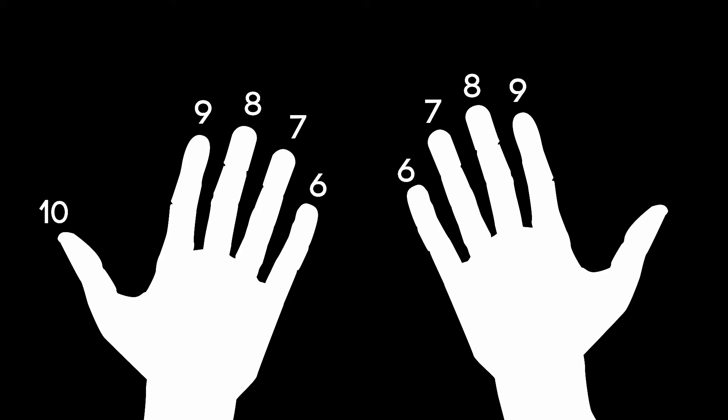Now let's say you had to multiply 6 by 8, you know, for personal reasons. The way we would do this with our hands would be to take your 6 finger on your left hand and your 8 finger on your right hand and touch them together to form a bridge.